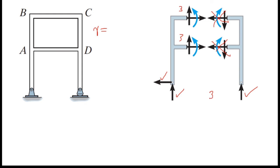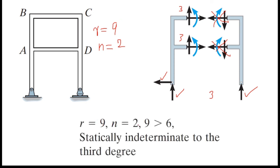Counting all components: 3 from the supports (two from pin plus one from rocker) plus 3 from the first cut plus 3 from the second cut gives r equals 9. We divided the structure into two parts, so n equals 2 and 3n equals 6. Since 9 is greater than 6, the structure is statically indeterminate to the third degree, because 9 minus 6 equals 3.